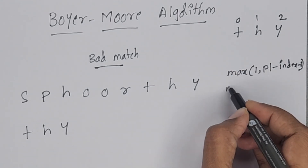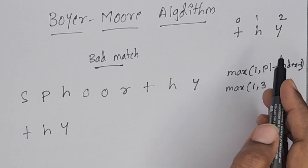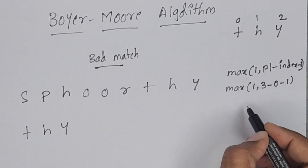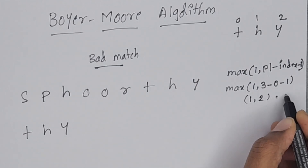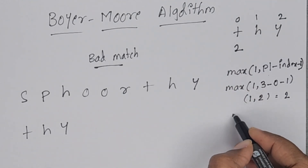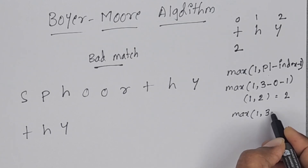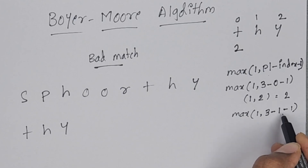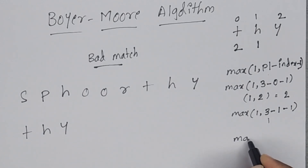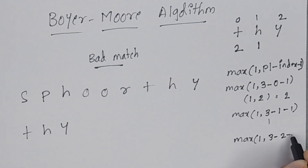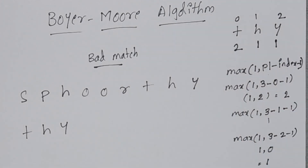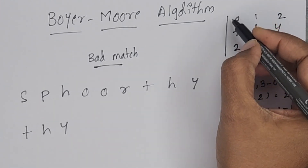First, I am going to calculate for T. Maximum of (1, pattern length is 3, minus index 0, minus 1) = maximum of (1, 2) = 2. So for T, we assign the value 2. For H, maximum of (1, 3 minus 1 minus 1) = maximum of (1, 1) = 1. For Y, maximum of (1, 3 minus 2 minus 1) = maximum of (1, 0) = 1. So we assign 1 to Y. Like this, we prepare the bad match table.